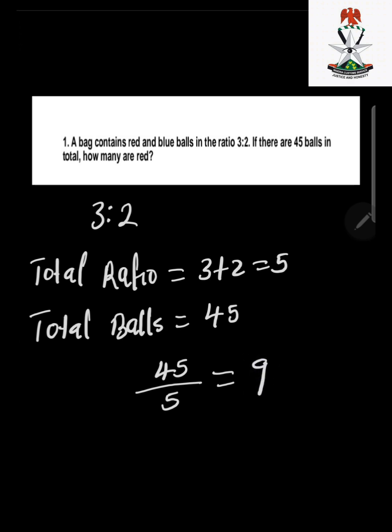The next thing we're going to do is find the ratio of red. As you can see, the last part of the equation asks how many are red. So we multiply this 9 by the ratio of red. Remember, 3 belongs to red, while 2 belongs to blue.